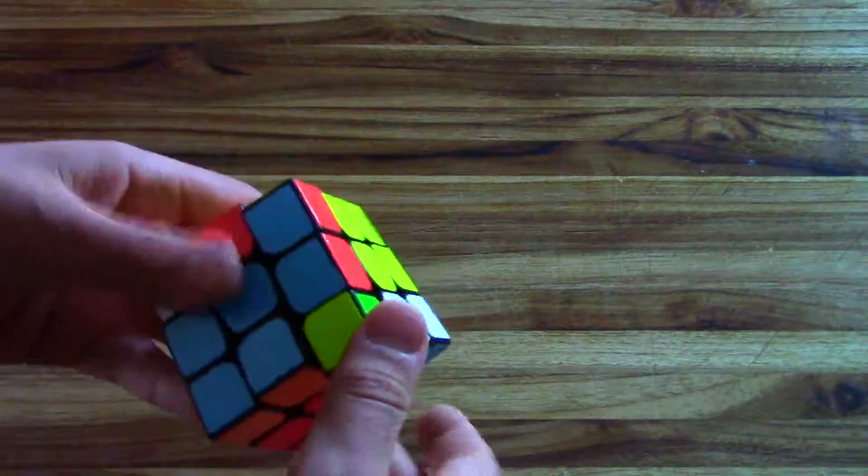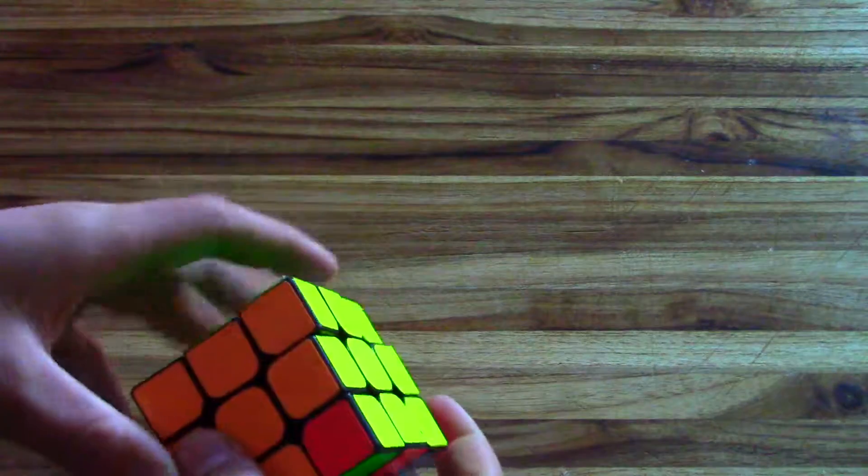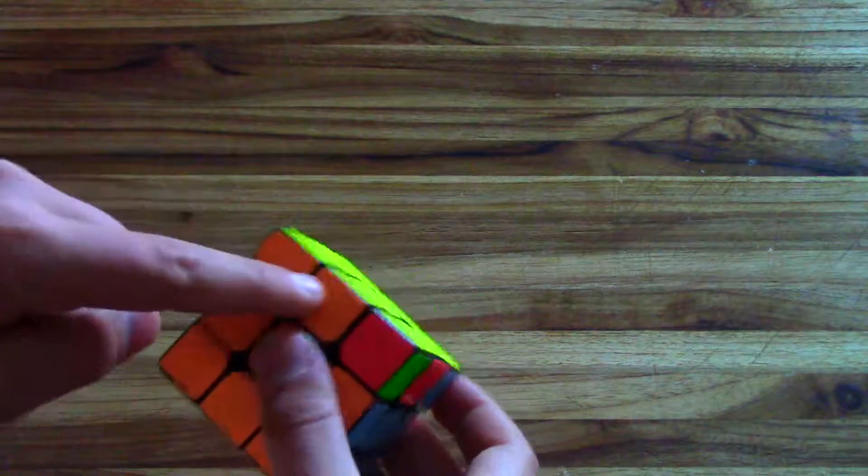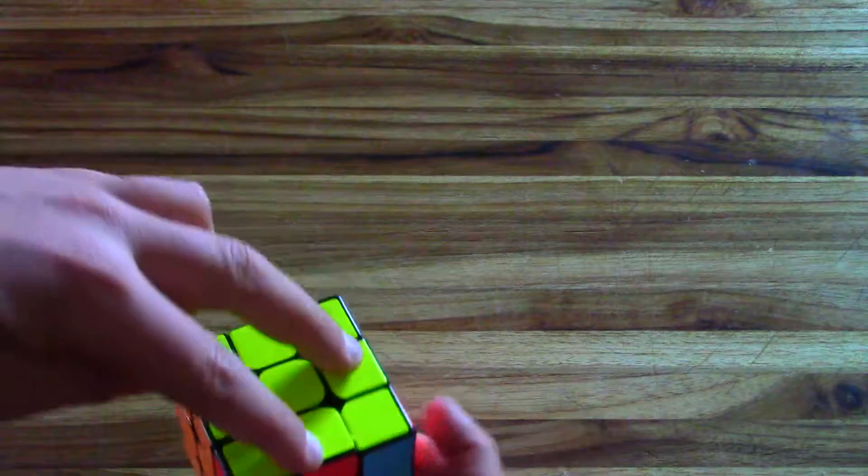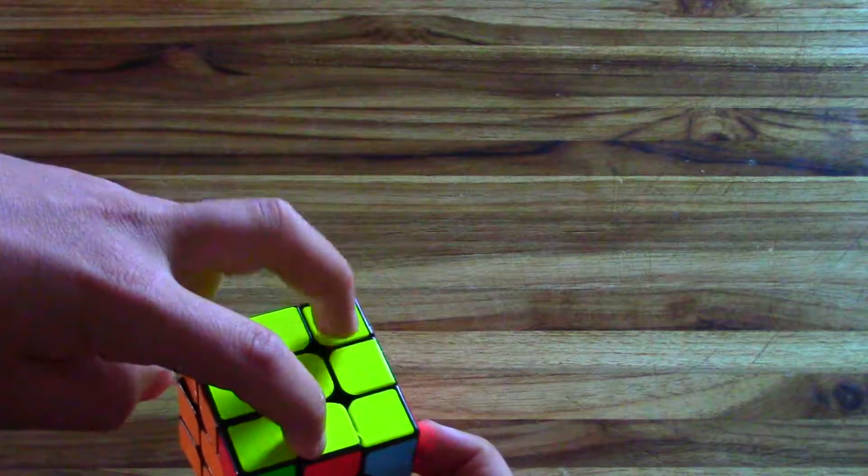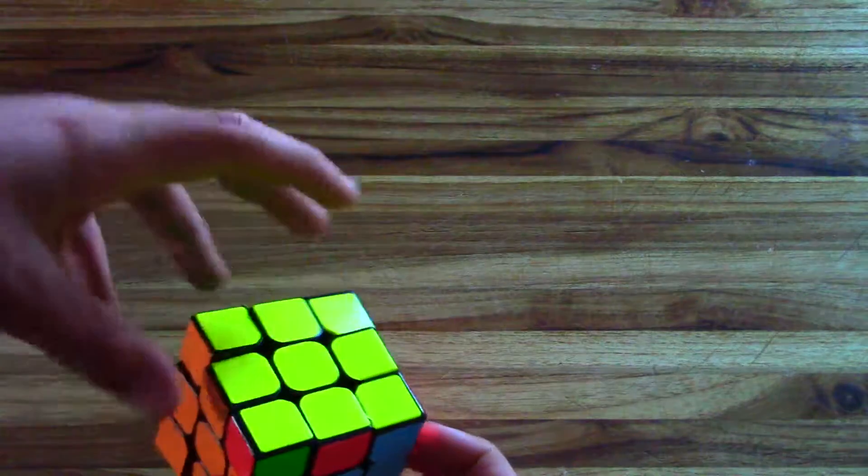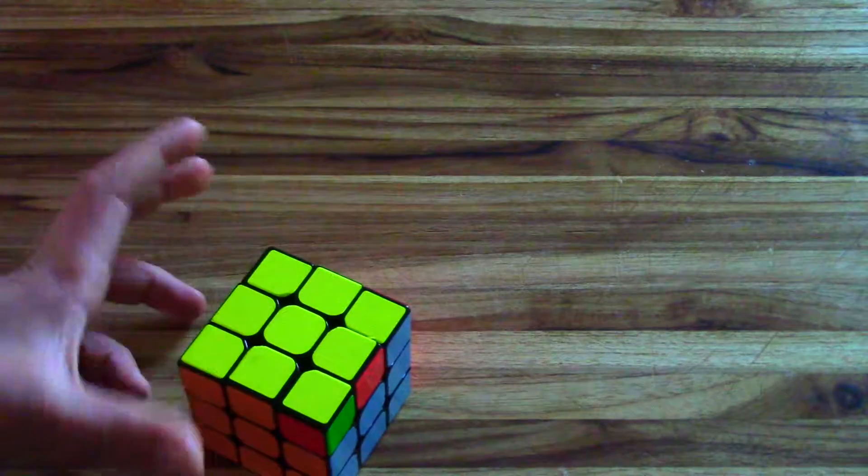So what the V permutation looks like is it has a big huge block right here, and these two edges right here need to swap and these two corners need to swap.